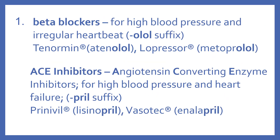Beta blockers are for high blood pressure and irregular heartbeat. They have the '-olol' suffix. Some examples include Tenormin, generic name is atenolol, and Lopressor, the generic name is metoprolol.